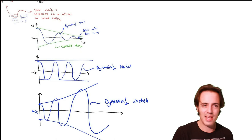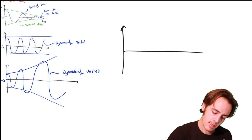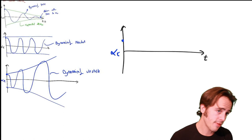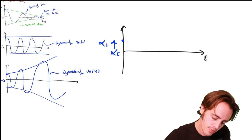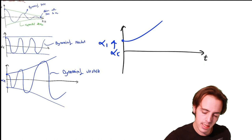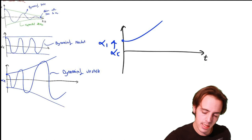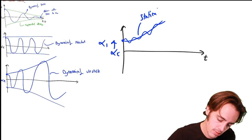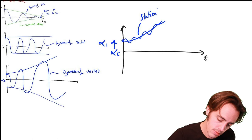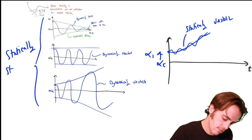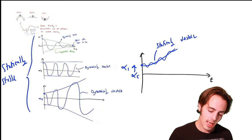For a statically unstable aircraft: if disturbed, the immediate tendency is just to move further away. You could have some dynamic behavior on top of this, but the whole system can never be stable if it's statically unstable. All three of the previous dynamic cases — stable, neutral, and unstable — were statically stable; the statically unstable case is in a separate category entirely.